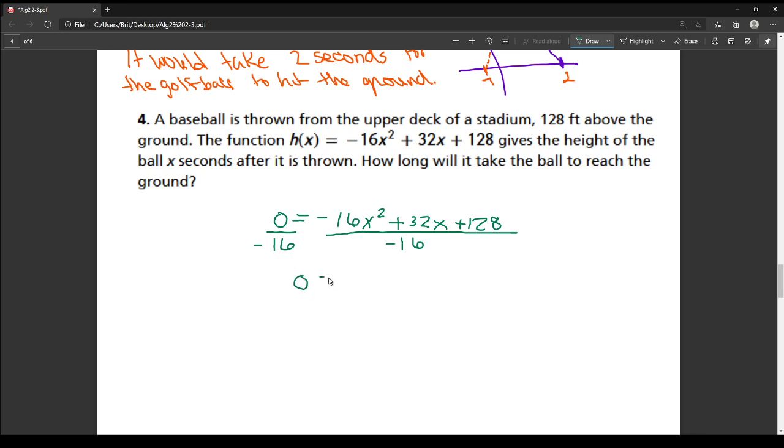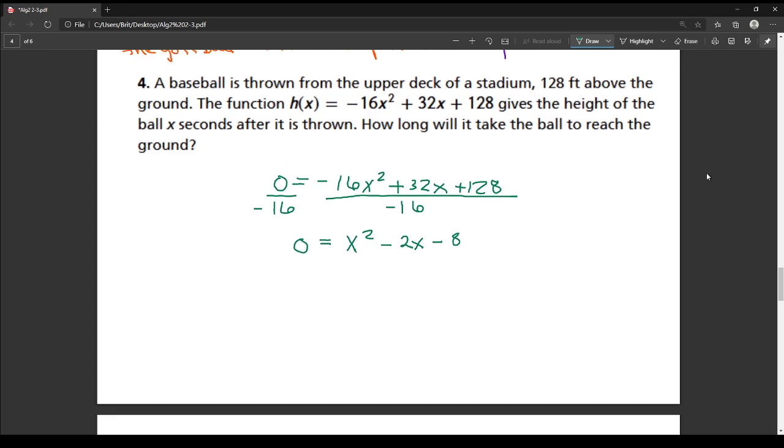So I'm going to divide both sides by negative 16. So I have 0 equals negative 16x squared divided by negative 16 is x squared. 32x divided by negative 16 is minus 2x. And 128 divided by negative 16 is negative 8. And that's a little less intimidating.